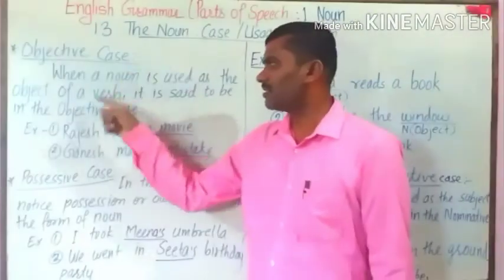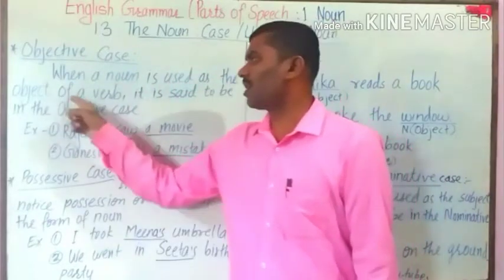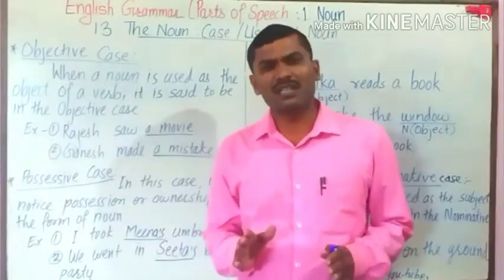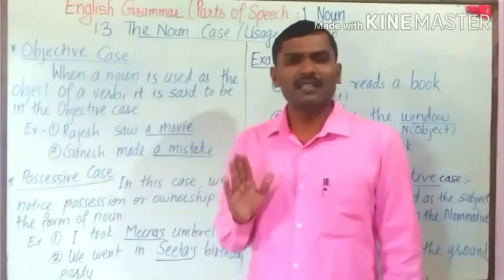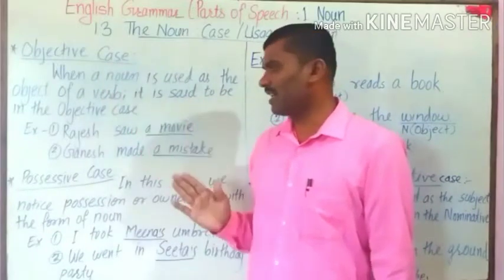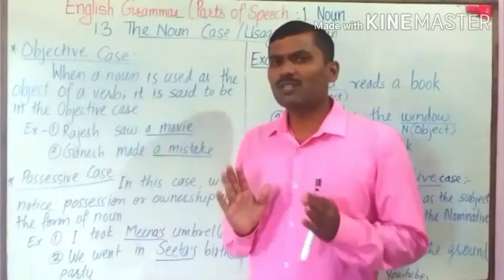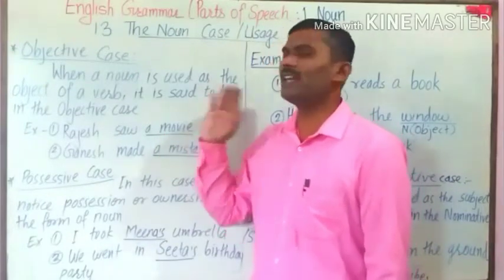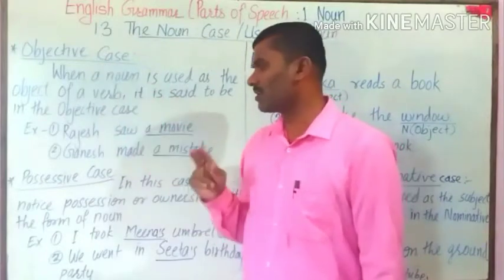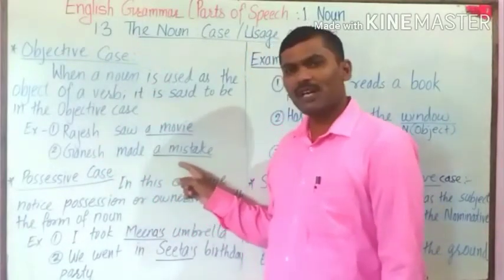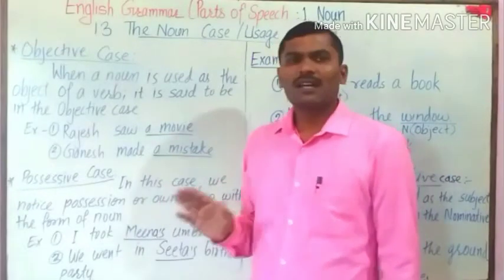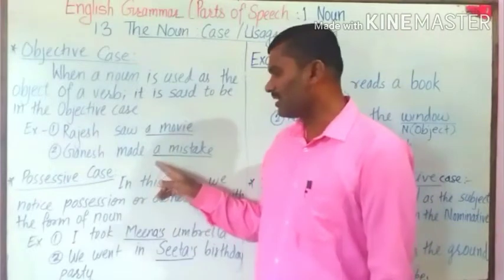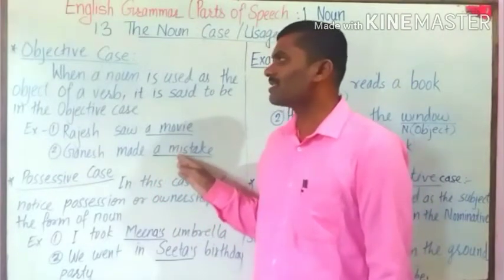Number two: Objective case. When a noun is used as the object of a verb, it is said to be in the objective case. It means when a noun is functioning as an object of a verb in the sentence, it is in objective case. For example, 'Rajesh saw a movie.' What did he see? A movie. Movie is a noun functioning as an object, so it is in objective case. Another example: 'Ganesh made a mistake.' Mistake is a noun functioning as an object of the verb 'made.' What did Ganesh make? A mistake. So, this noun is in objective case.